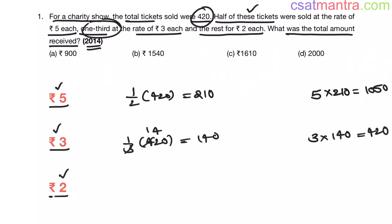Now 2 rupees tickets, how many left? 210 plus 140 is 350, so 420 minus 350, that is equal to 70 tickets left. Now the amount collected by 2 rupees tickets: 2 into 70, that is equal to 140.